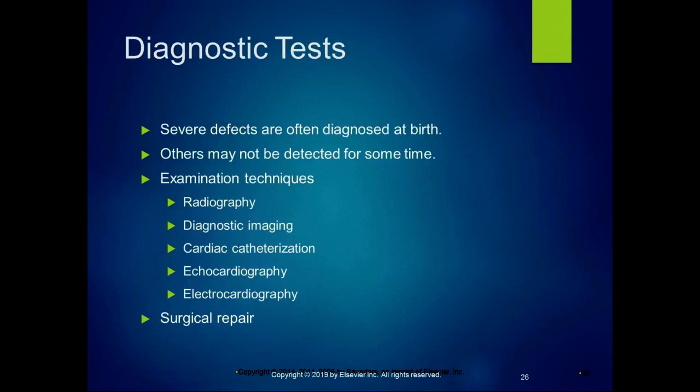Severe defects are often diagnosed at birth because it's noticeable — when they're checking the baby's Apgar signs immediately after birth, the baby might be cyanotic, which is usually caused by a severe defect and is diagnosed right away. Others might not be detected for some time. You might have a murmur or a valvular deficiency that is not major, but it starts to show up over time. Radiography is used to look for cardiomegaly — an enlarged heart — or other defects visible in a radiograph.